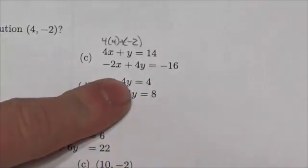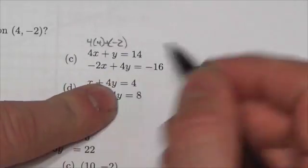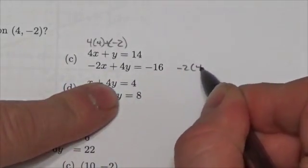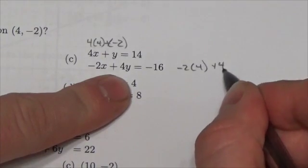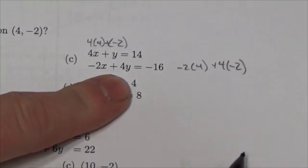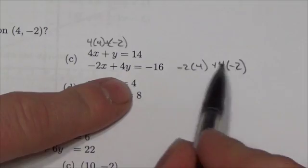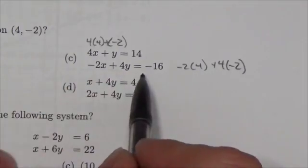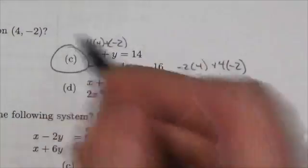Let's see if it satisfies the next one. So if I plug 4 into that, that would be negative 2 times 4 plus 4 times negative 2, and there it is, negative 8, and negative 8 is negative 16. Awesome. So that looks to be the answer here.